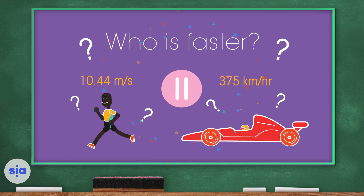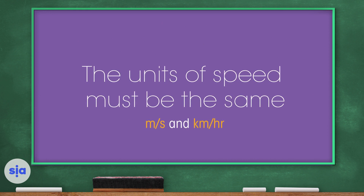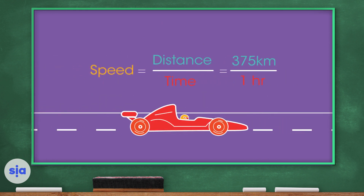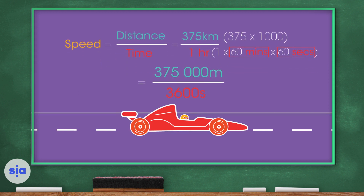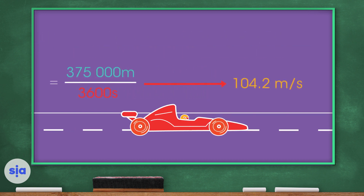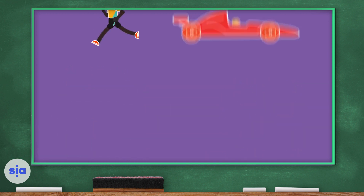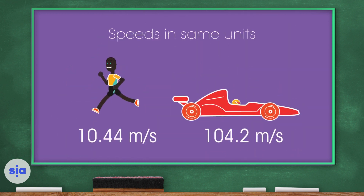To compare, the units of speed must be the same. Converting the Formula 1 speed into meters per second: kilometers to meters means multiplying by 1,000; one hour to seconds means multiplying by 60 twice. So 375,000 meters divided by 3,600 seconds gives 104.2 meters per second. The Formula 1 car is much, much faster.